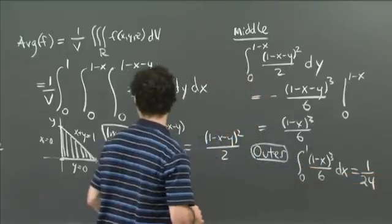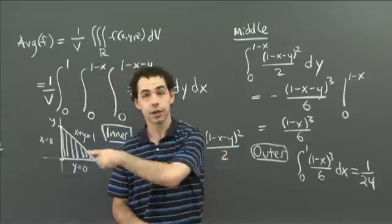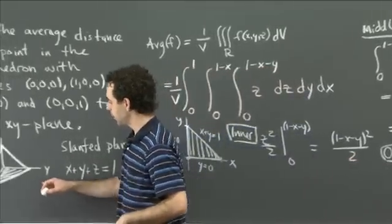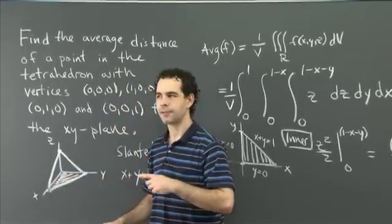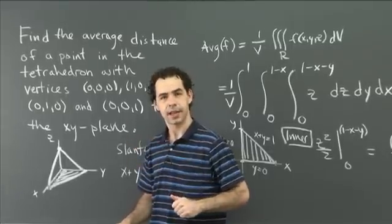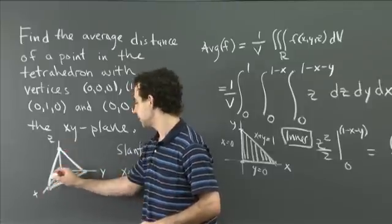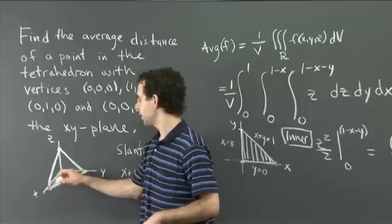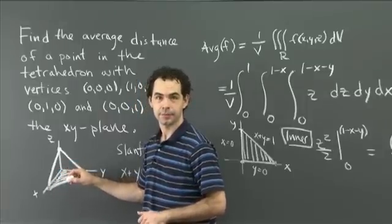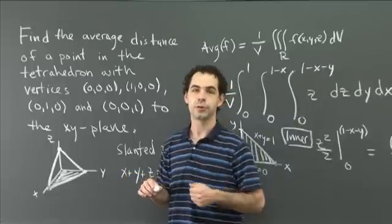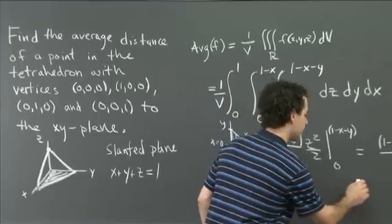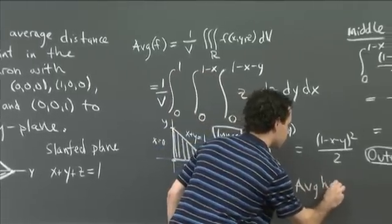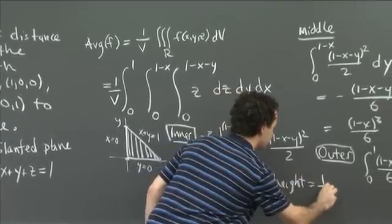So the average height is (1/24)/V, and we need to find the volume of the tetrahedron. The volume of a tetrahedron is 1/3 times the area of the base times the height. This tetrahedron has height 1, and its base is a right triangle whose legs are both 1, so the base area is 1/2. Therefore the volume is 1/6. Since the volume is 1/6, the average value is (1/24) × 6 = 1/4. So the average height is 1/4.